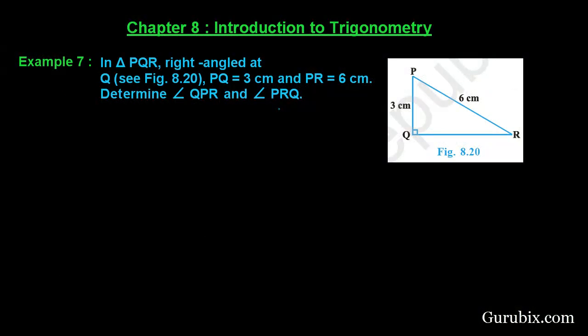Welcome friends, let us solve example number 7 of chapter 8. The example says: in triangle PQR, right-angled at Q, which is shown in the given figure, PQ is 3 centimeters, PR is 6 centimeters. Determine angle QPR and angle PRQ.